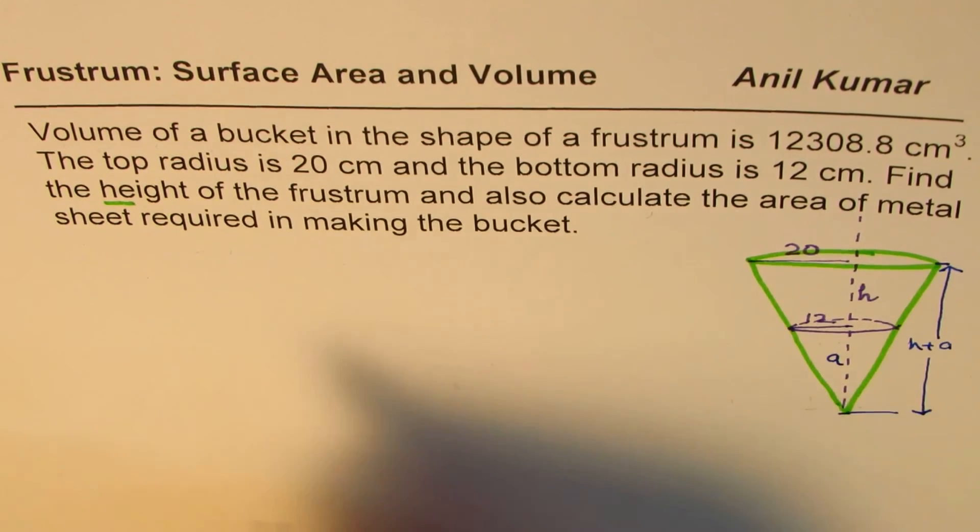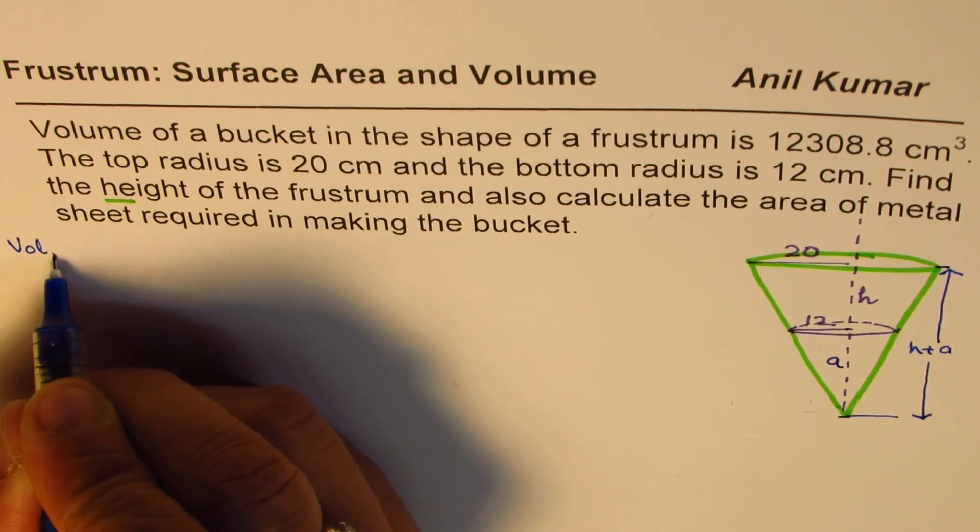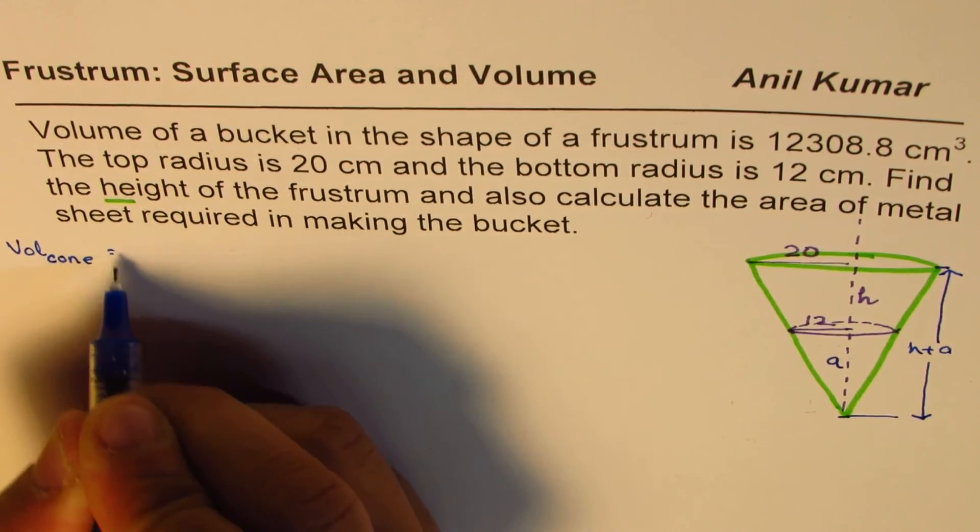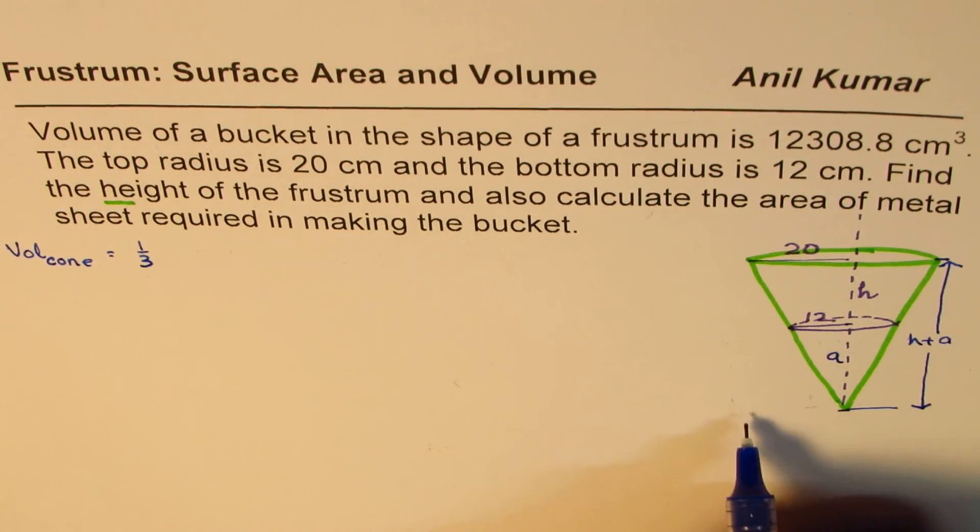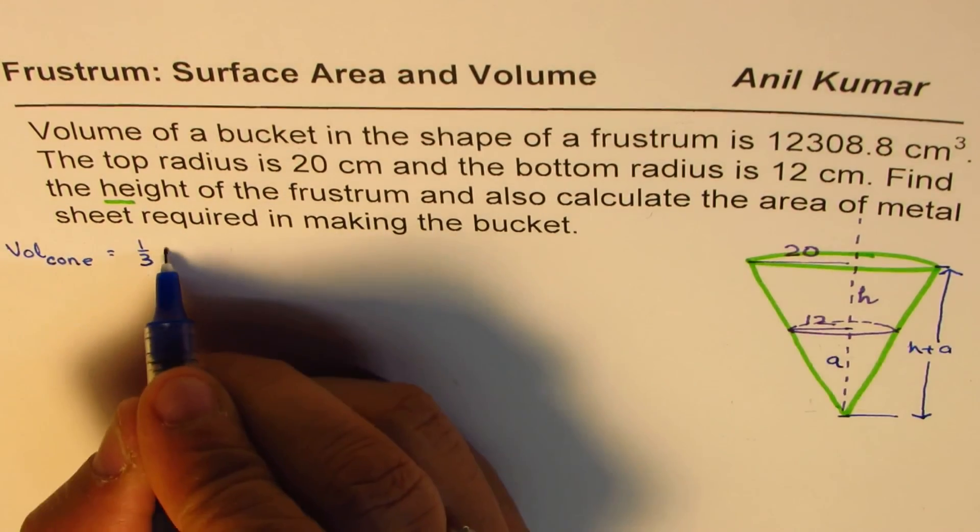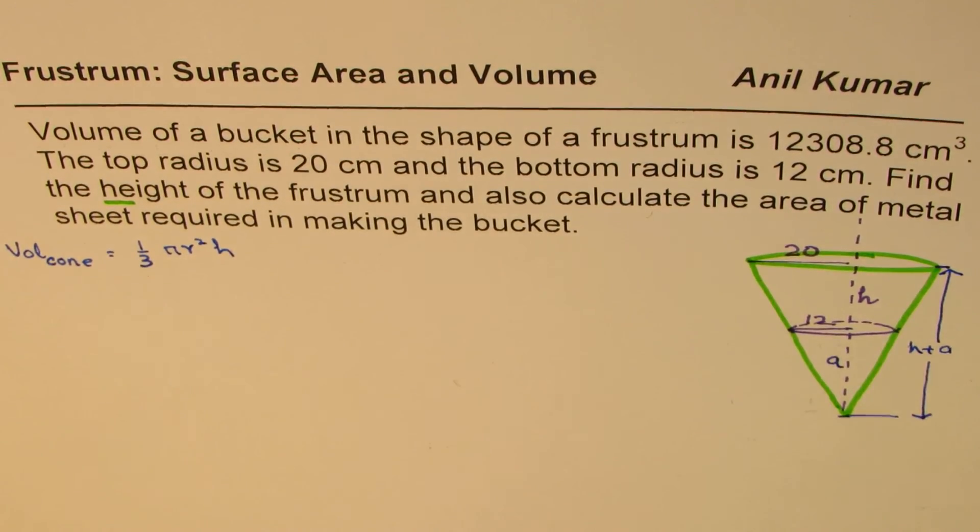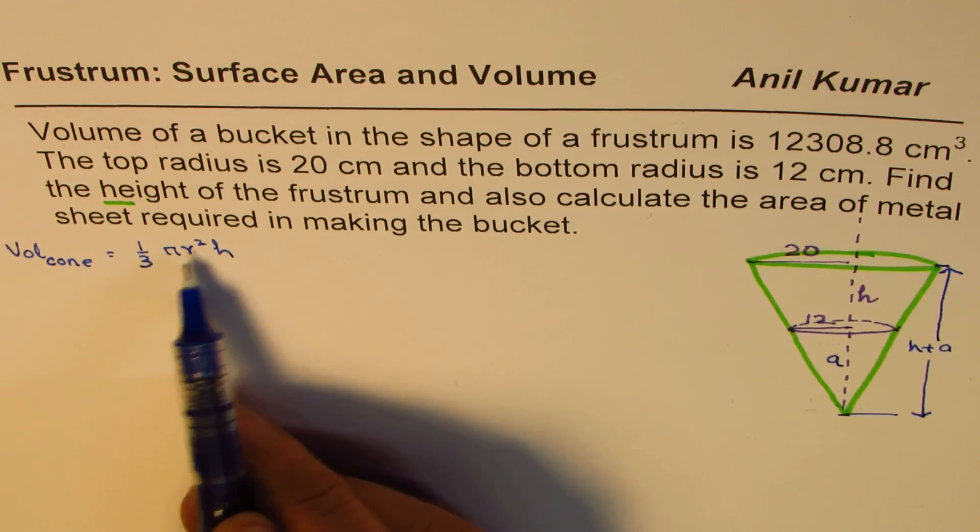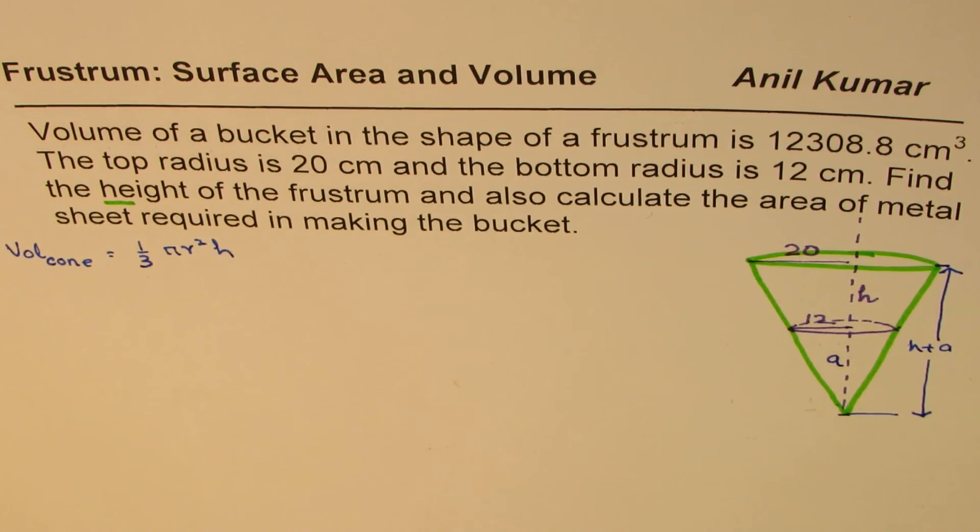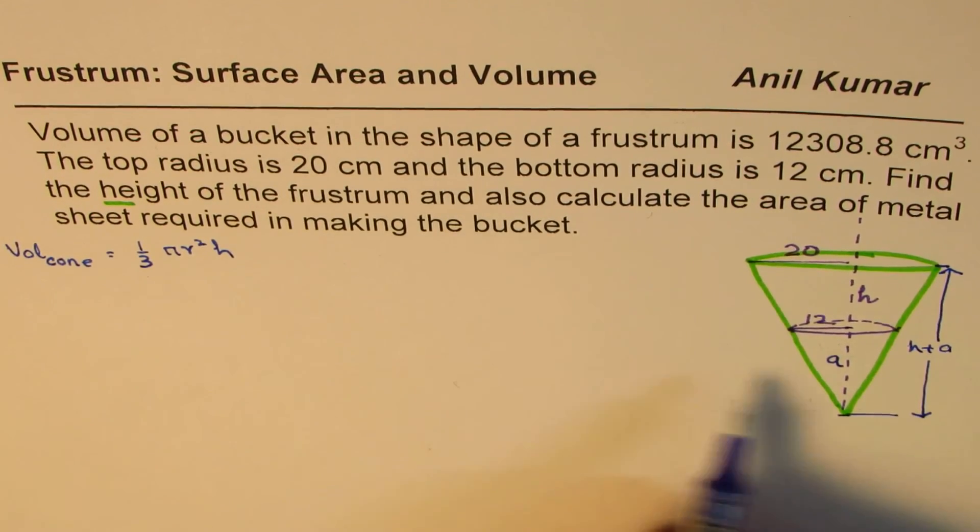Volume of a cone, that formula I'm not deriving. We know volume of a cone is basically one-third the volume of a cylinder, which is πr²h. That's an easy way of learning the volume of a cone is the volume of the cylinder, one-third of it. Three cones can fit into a cylinder. So that's the formula which we are going to use.